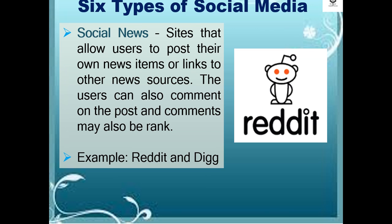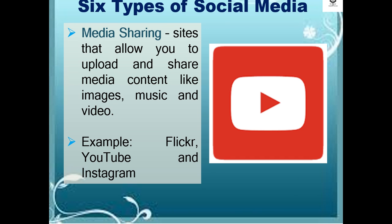Social news sites allow users to post their own news items or links to other news sources; users can also comment on posts and comments may be voted on. Examples are Reddit and Digg. Media sharing sites allow you to upload and share media content like images, music, and video — for example, Flickr, YouTube, and Instagram.